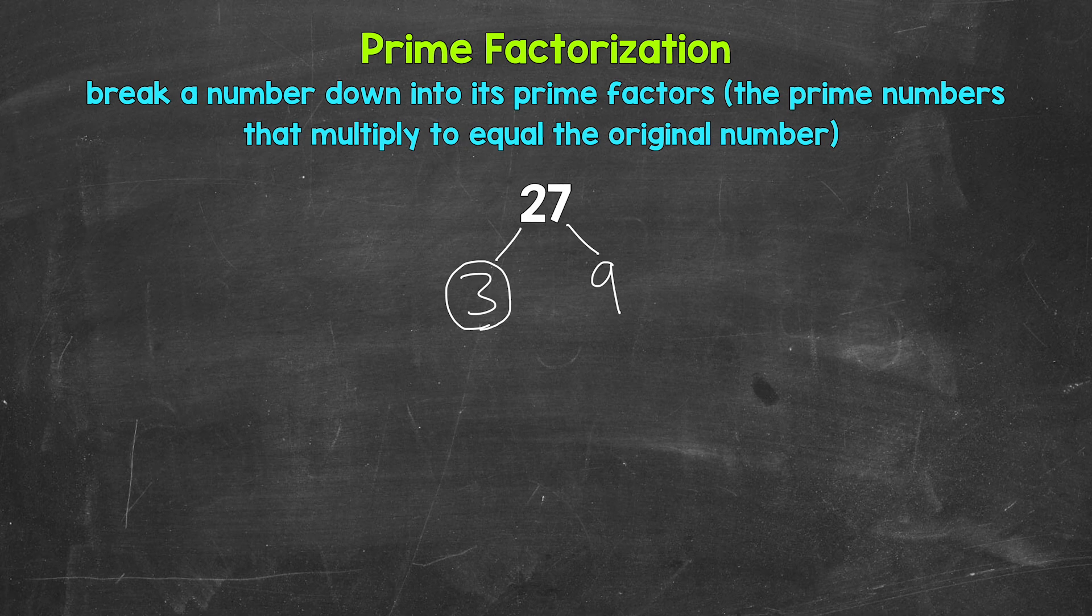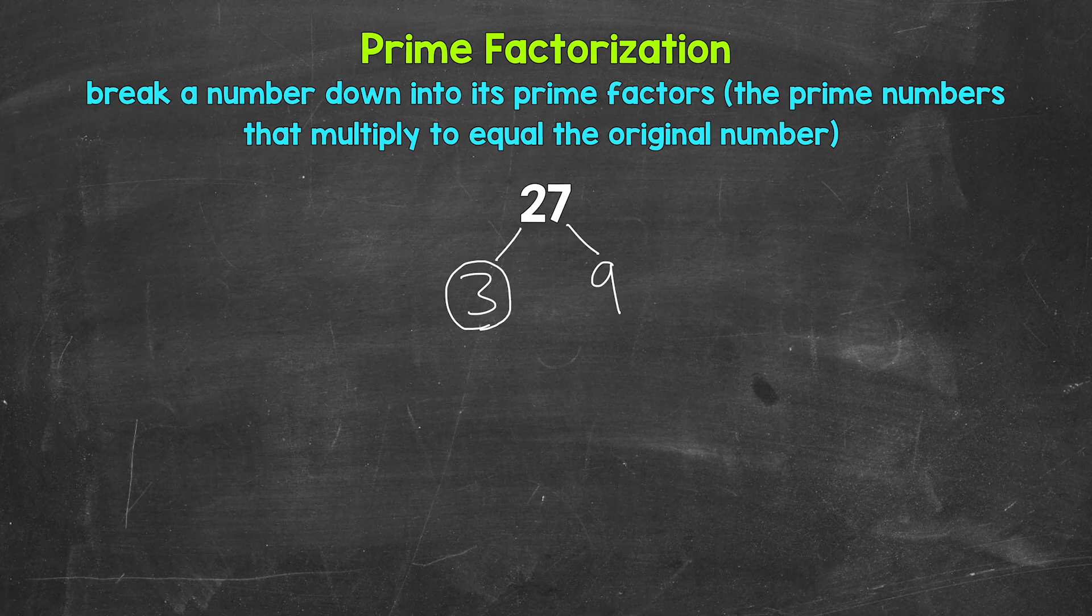Let's think of some factors. Three times three is nine. Three is a factor of nine. So let's break this down into three and three.